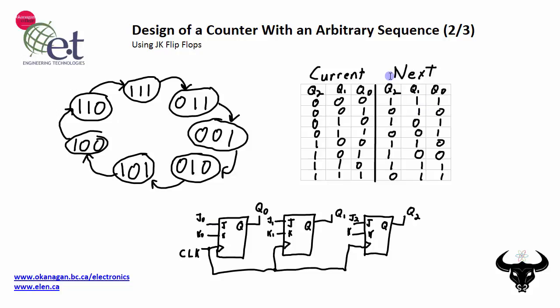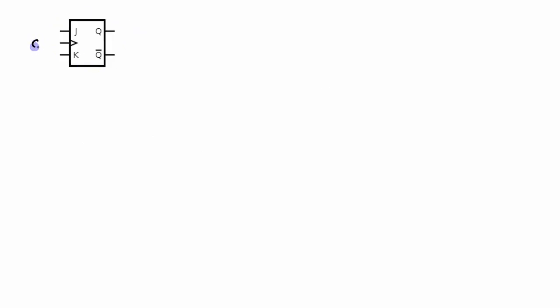Each one of the J's and K's controls one of the Q's, and the inputs to the J's and the K's are going to come from what the current values of all three of the Q's are. However, the values that go into the J and K will only control one of the Q's. Before doing all that, let's remind ourselves on how the JK flip-flop works.